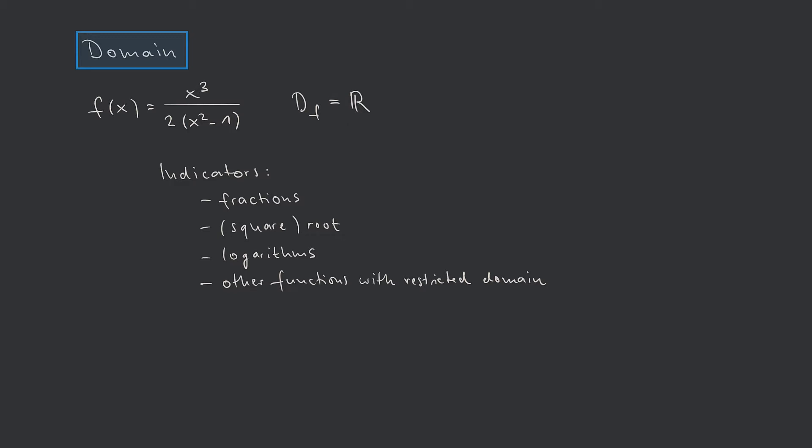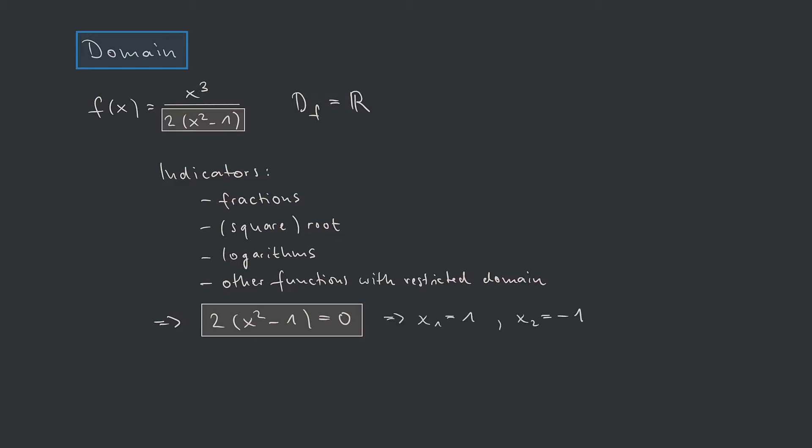It is well known that the denominator of a fraction may not be zero. So we exclude all x values where the denominator assumes the value zero. Setting the denominator equal to zero and solving for x gives two solutions: x₁ = 1 and x₂ = −1. So we have found that the domain of f is all real numbers except for 1 and negative 1.